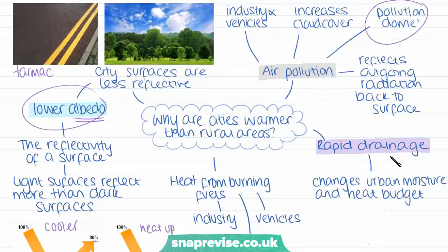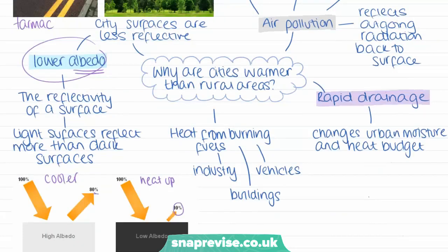Another reason why cities are warmer is because we have a lot of sewers and hard surfaces in cities. Water falling onto these surfaces is quickly disposed of into sewers and drains and canals as quickly as possible. This will change the urban moisture and heat budget that we find in cities, and it means that there's reduced evapotranspiration, so more energy is available to heat the atmosphere rather than heating the water, because there's very little water in cities. We also get excess heat coming from industries and buildings and vehicles which are all burning fuels, and when these fuels are burnt, they generate heat and this adds to the heat in the city.